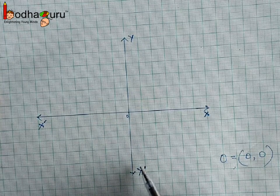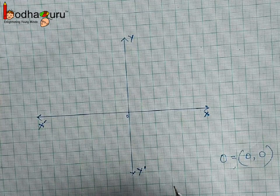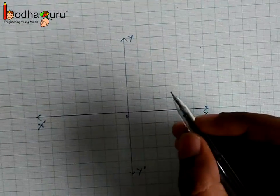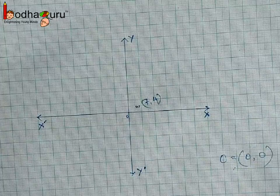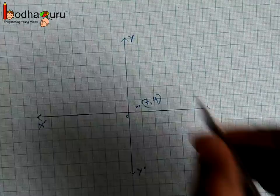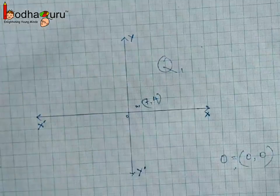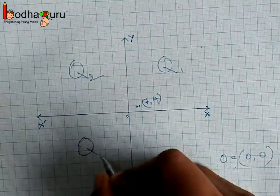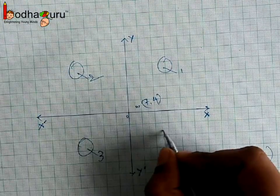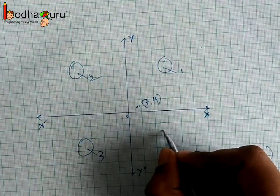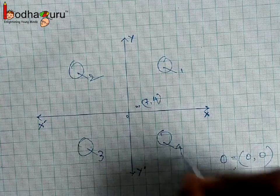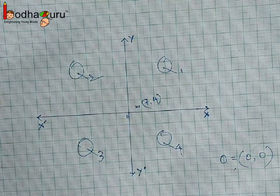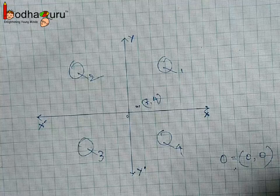Going up from the x-axis means a positive y coordinate; going down from the x-axis means a negative y coordinate. As we can see, the axes divide the plane into four parts. They are called quadrants and are denoted by Q1, Q2, Q3, and Q4.